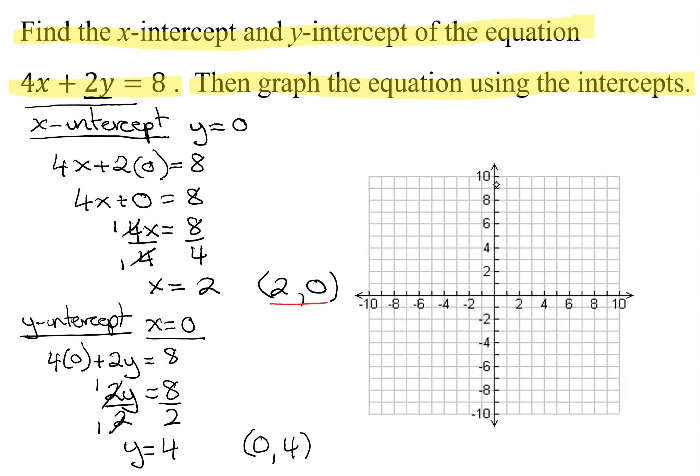So I'm going to graph my x-intercept first, 2, 0. So start at the origin. x is 2, go 2 to the right, nowhere in the y-direction. So there's my point.